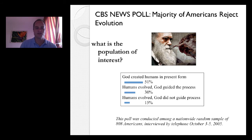And so you see these three results. God created human present form, 51% of respondents say that. 30% say humans evolved, God guided that process. And 15% say humans evolved, God did not guide the process. And so the 51% that say God created humans in present form is extrapolated to that headline of the majority Americans reject evolution. So the question could be, what's the population of interest? So the first question, the second question is, what's the sample?